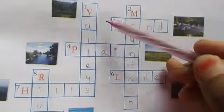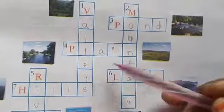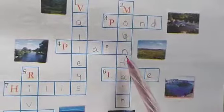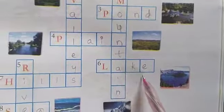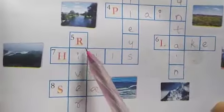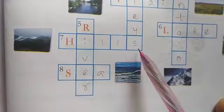See the pictures and complete the puzzle — valleys, plain, mountain, pond, lake, rivers, hills and sea. Children, complete the notes and once go through the lesson reading. Have a nice day. Thank you.